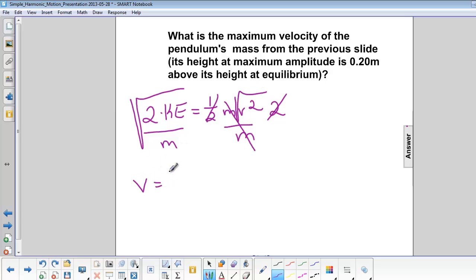So we get v is equal to the square root of 2ke over m.